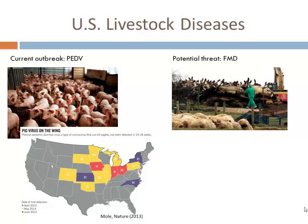The worst-case scenario for the United States would be foot and mouth disease, which spreads in multiple species and is very hard to control — even temperatures of 160 degrees aren't quite sufficient to kill it. Foot and mouth disease has spread with very catastrophic consequences in other countries. The 2001 UK outbreak resulted in 8% of UK livestock farms being culled and losses of over $4 billion to both the food chain and the agricultural industry.